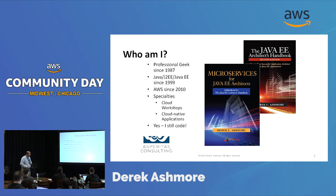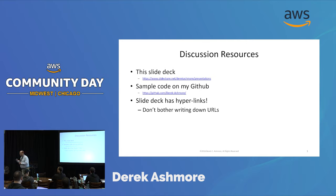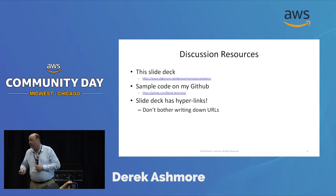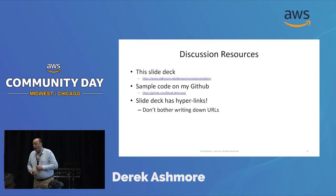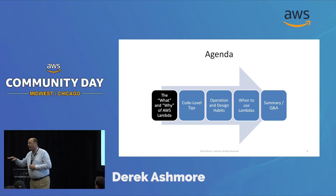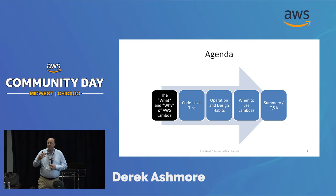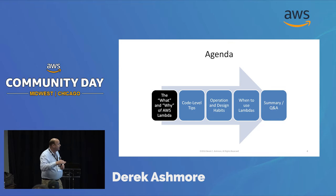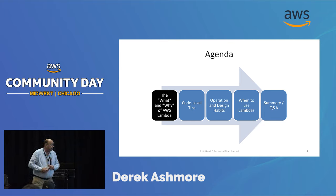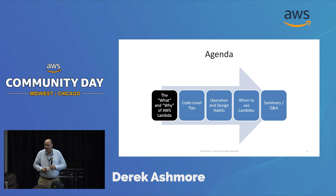Let's talk about discussion resources. This presentation deck is on my SlideShare — that's the only slide you need to photograph. Everything else in this presentation is on that SlideShare, and I use active links liberally so you don't need to record URLs. All my samples come from my GitHub. On the agenda: first a couple of slides to boost people who haven't coded a lambda, then coding-level tips, higher-level support and operational habits, when to use lambdas, and then Q&A.